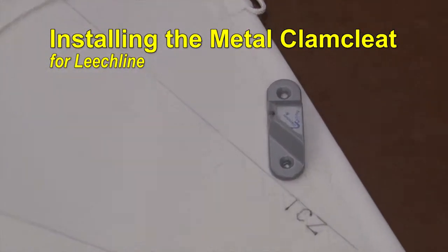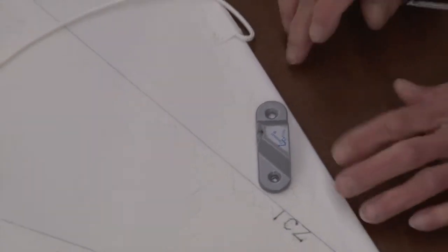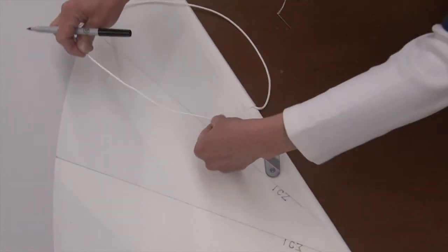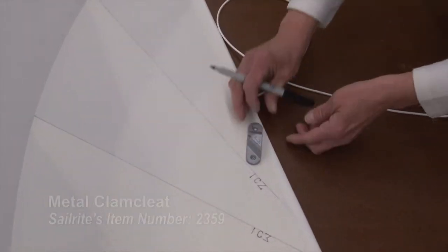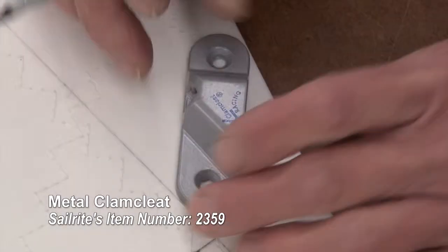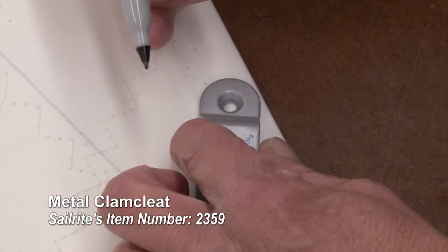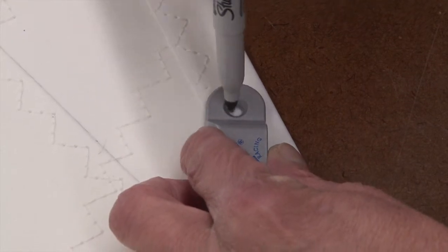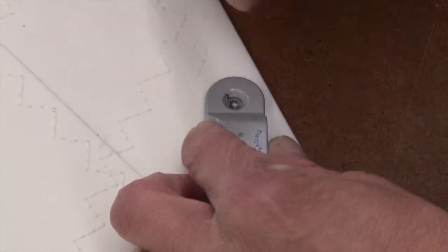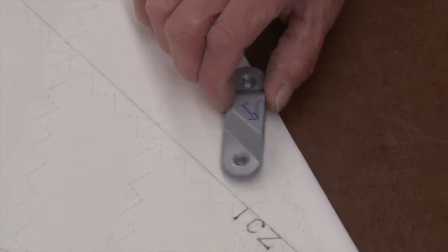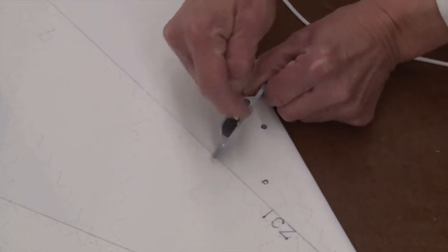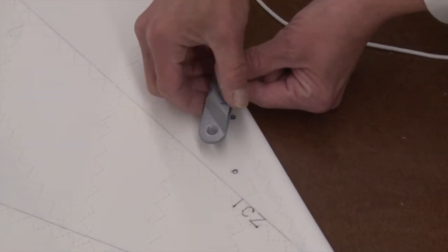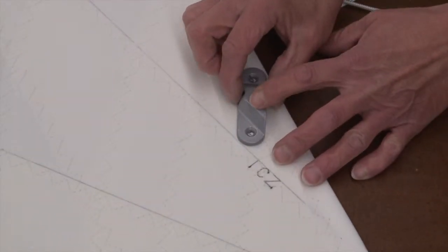This is the metal clam cleat for a leech line. We want to position it so that the line will enter and exit on this side. I'm going to put it on here and mark where my holes are at. Again, you want it so that this is toward the outside. Your line will come out and go in and come out. We're going to place it at an angle.